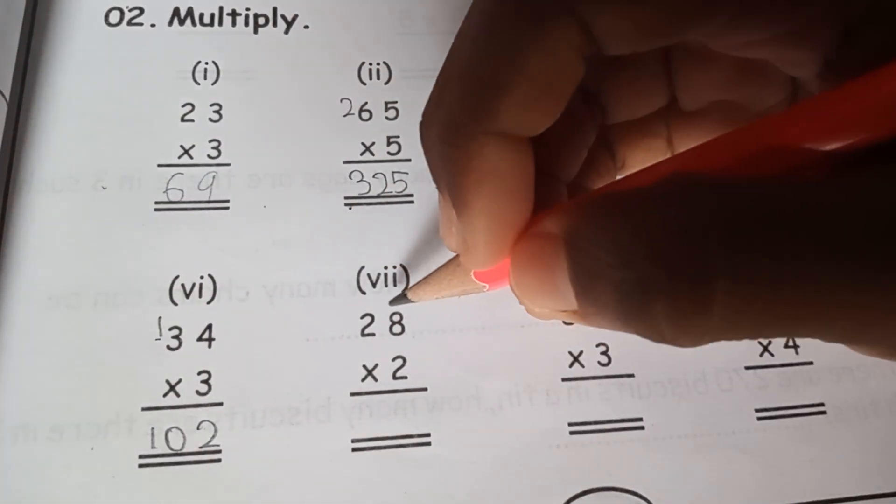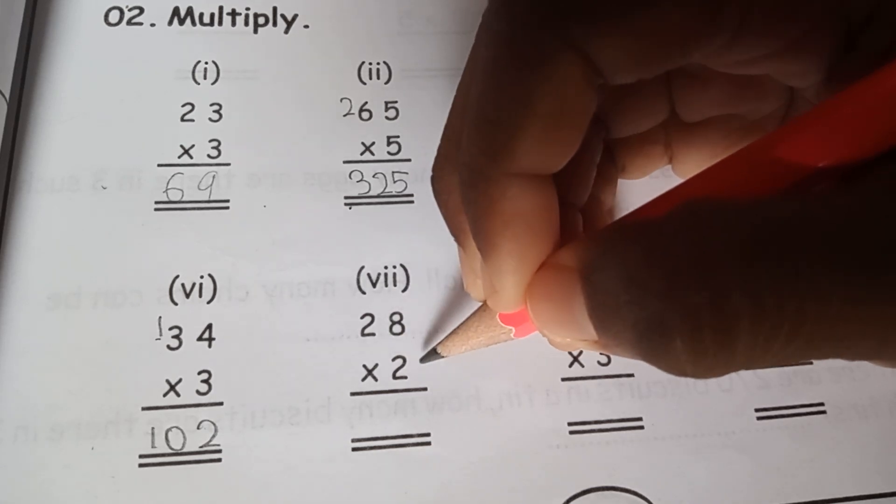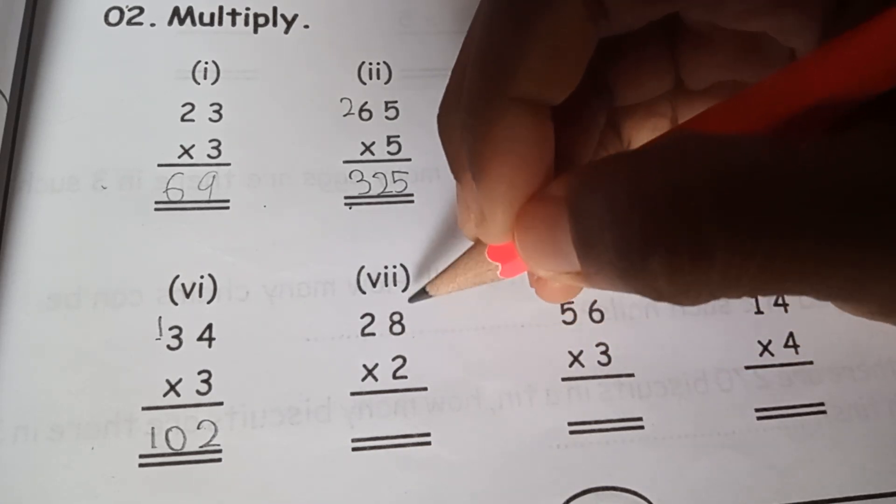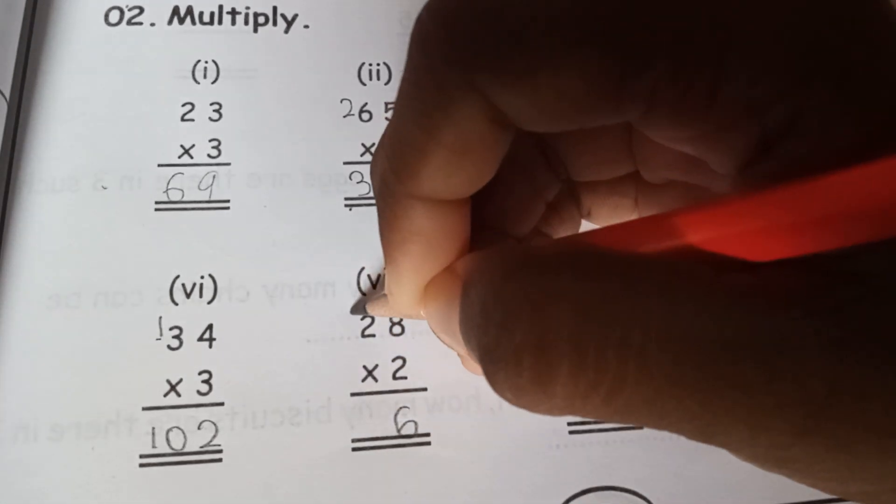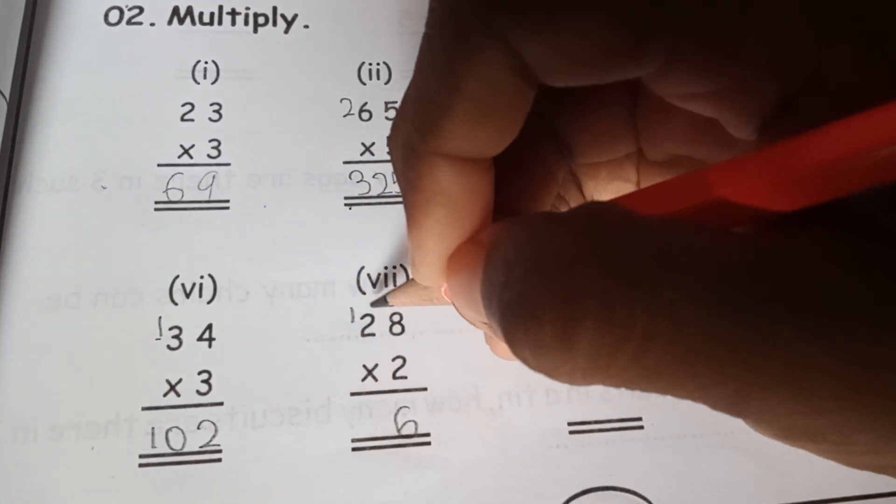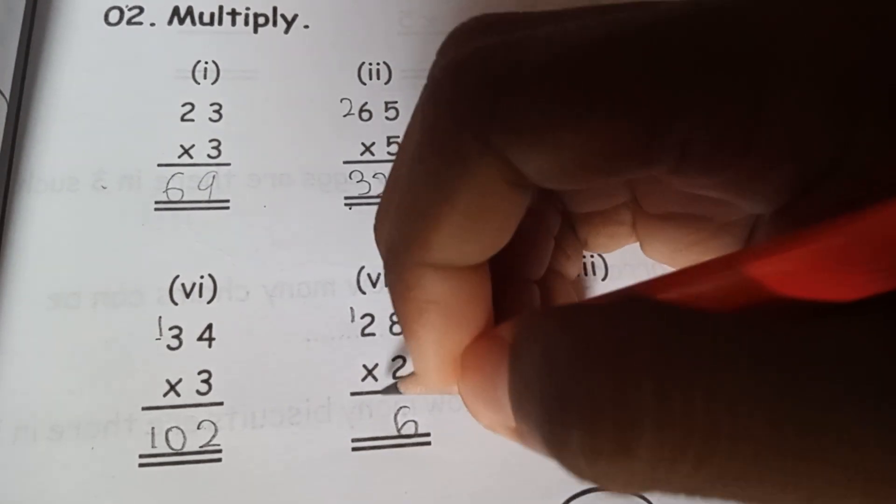28 times 2. 2 times 8 is 16, so 1 will be over here. 2 times 2 is 4, 4 plus 1 is 5. 56.